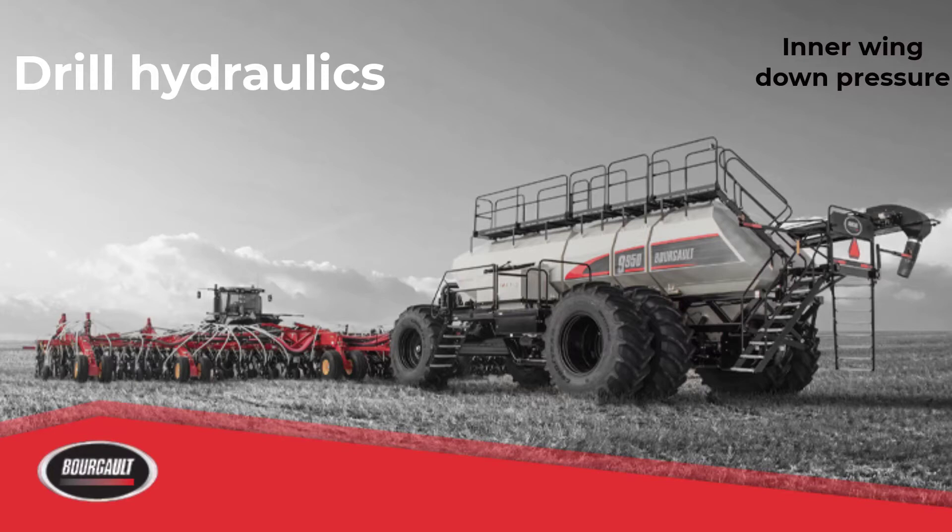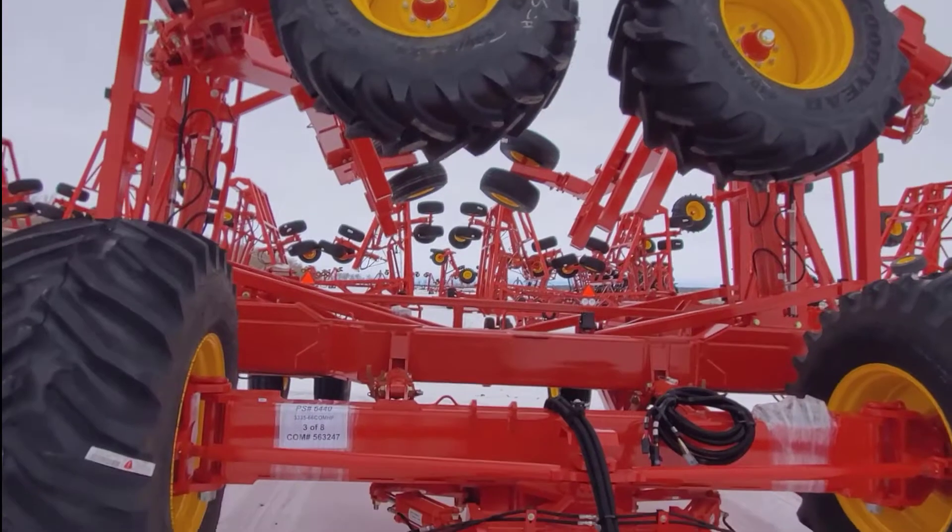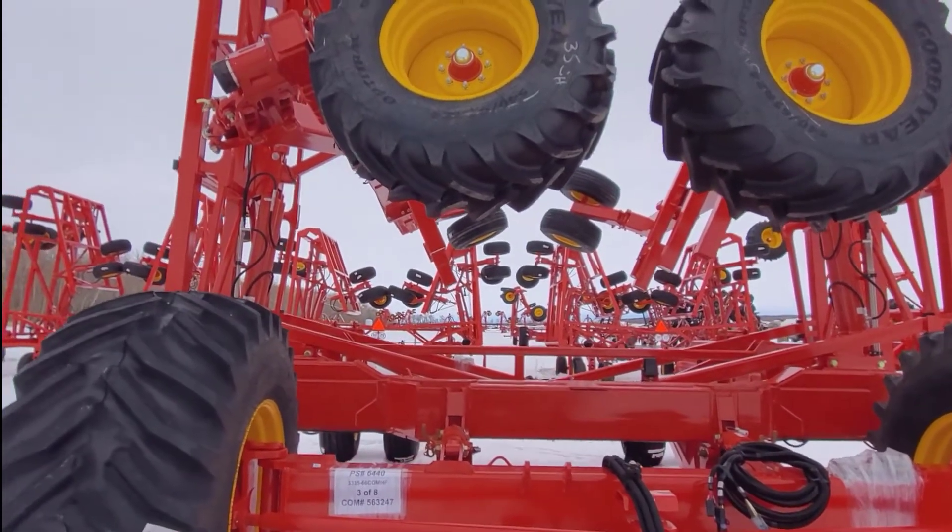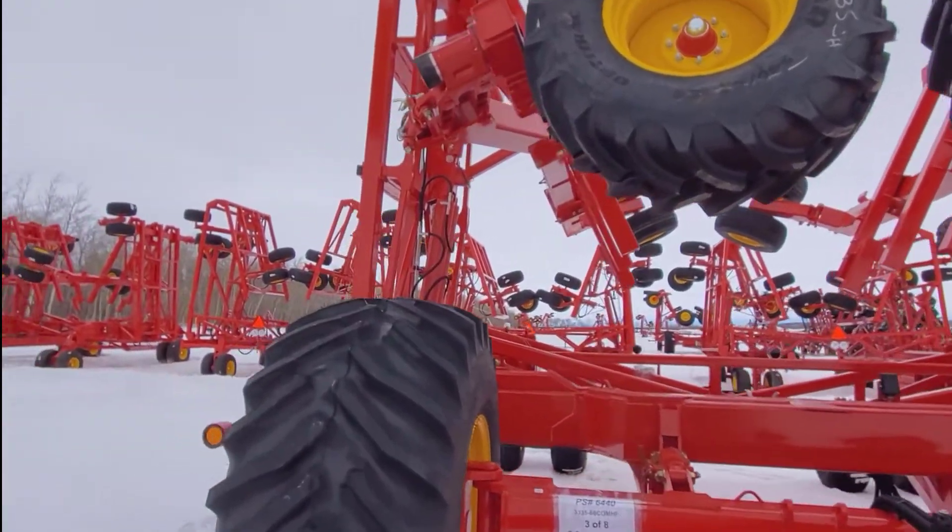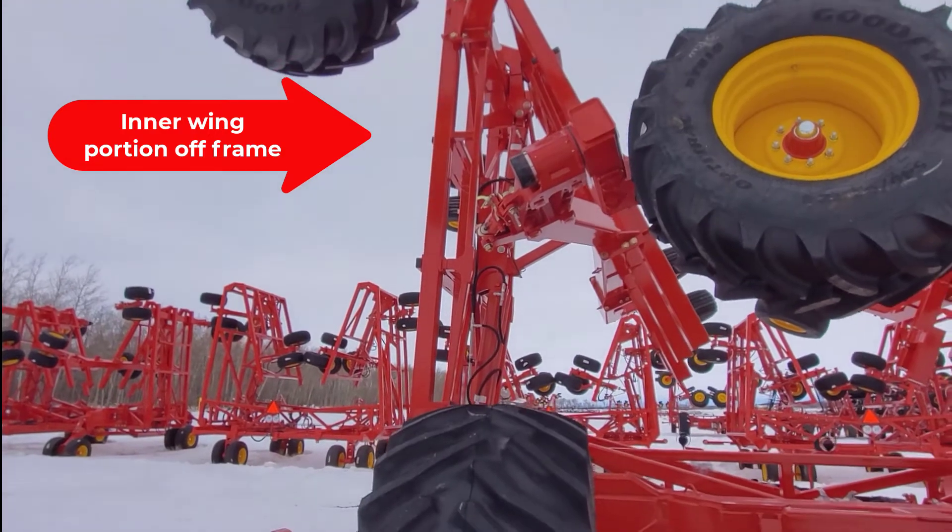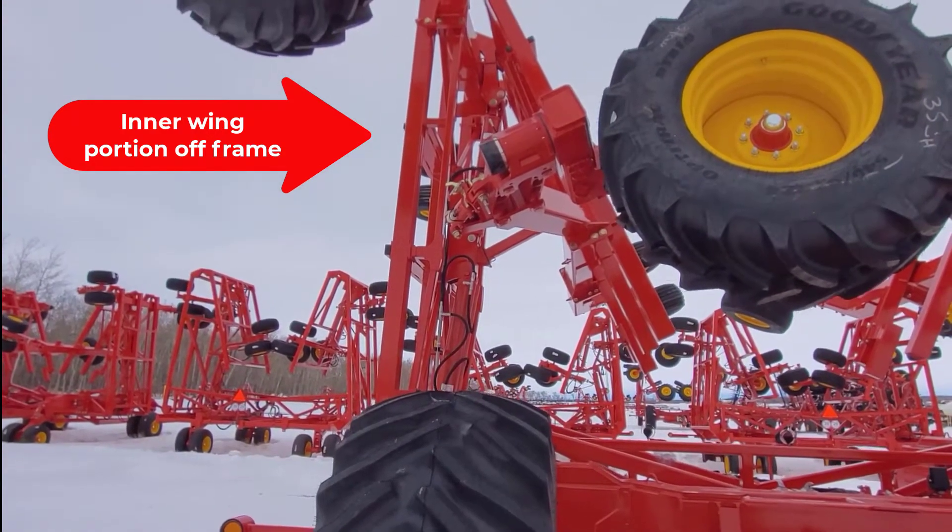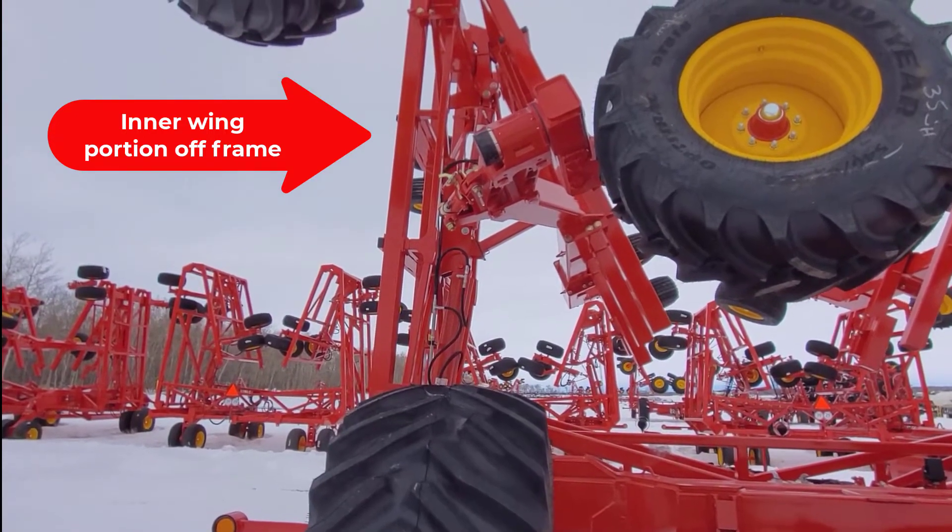In the following video we'll review inner wing down pressure and what it is. Why do we have the tie-in to the opener side, to the wing lift side? Those large wings on the inner wing sometimes may not be heavy enough, so the tires will ride out and then we're not having our proper seed placement because the wings are coming up.